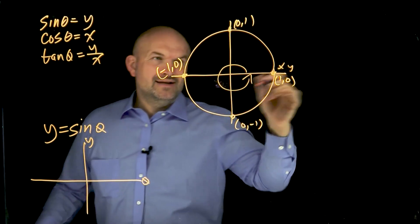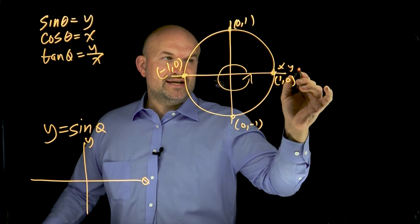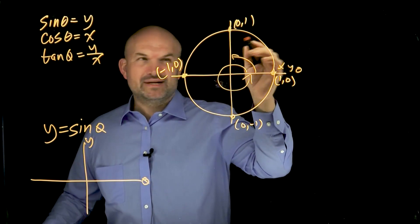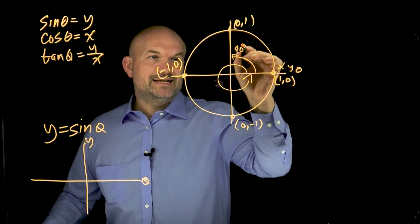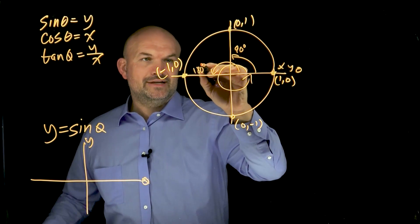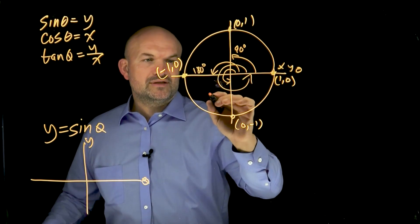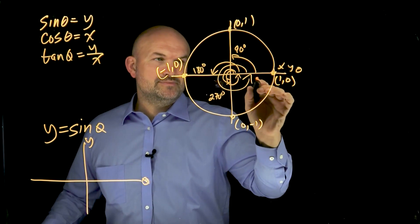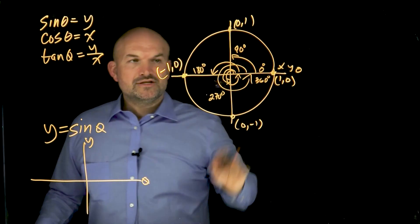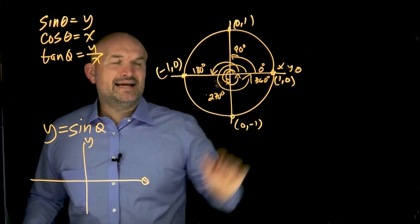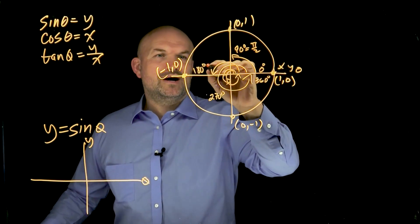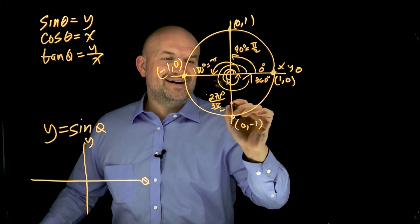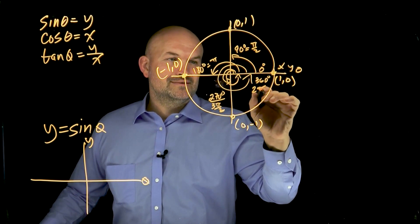All we're simply going to do is go through these four points. Let's go through the angles. The first angle is zero, then pi halves, then pi, then three pi halves, and then two pi. The output can only be as high as one and as low as negative one — those are our maximum and minimum values.